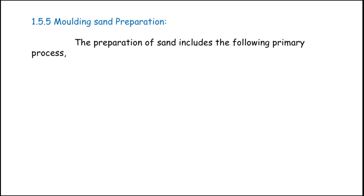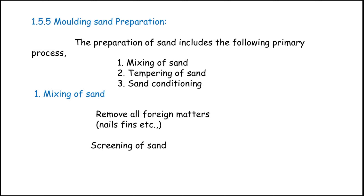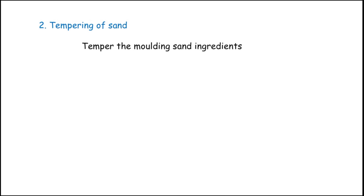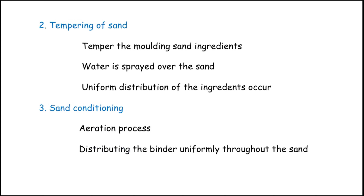Molding sand preparation includes the following primary processes: mixing, tempering, and sand conditioning. Mixing involves removing all foreign matter such as nails and fins from the molding sand, screening of sand, and mechanical mixing of sand with ingredients using a muller machine. Tempering involves spraying water over the sand so it is uniformly distributed among the ingredients. Sand conditioning involves an aeration process to distribute the binder uniformly throughout the sand.